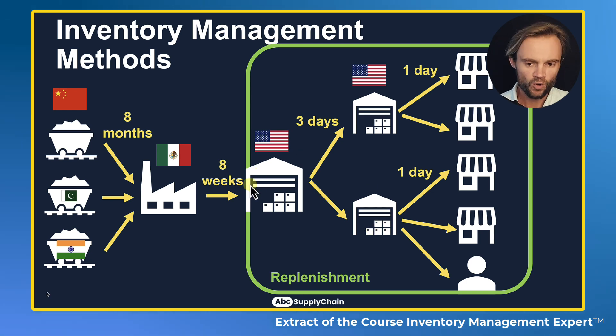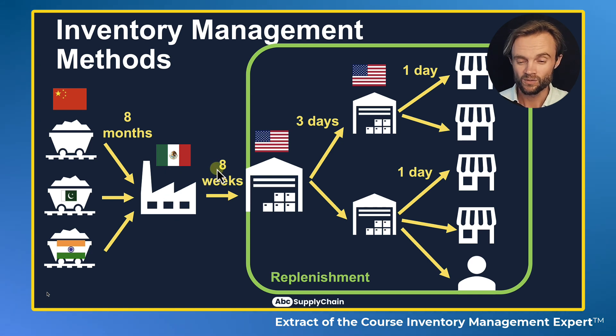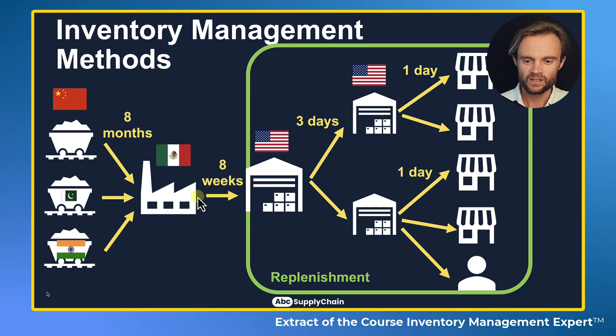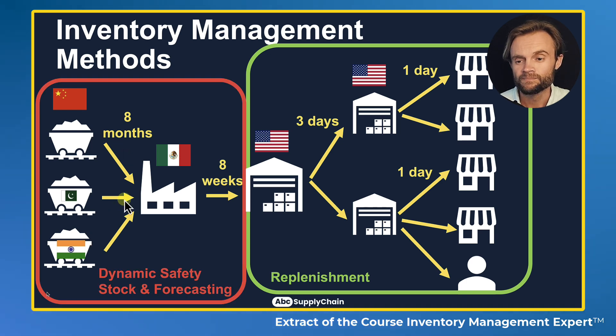It's more complex when you have longer lead times — like needing to buy products from Mexico or from China with eight weeks lead time, or eight months with raw materials from India.